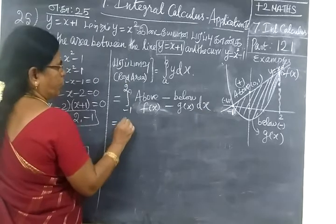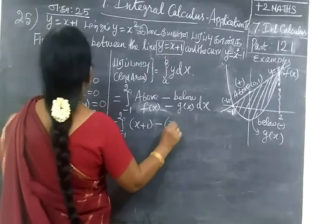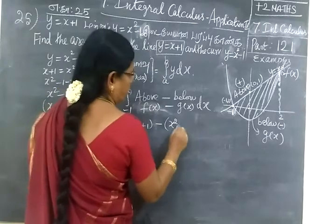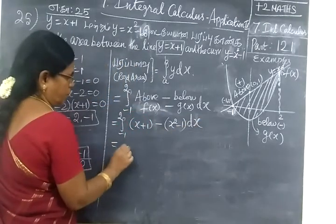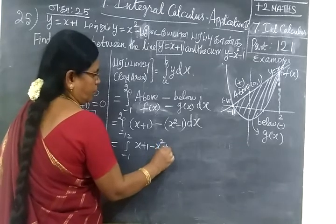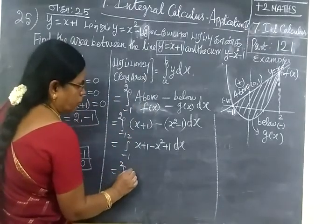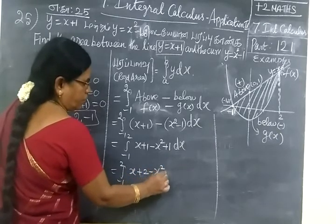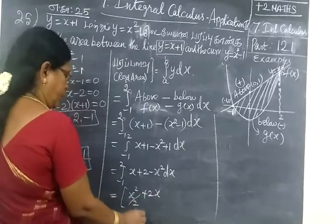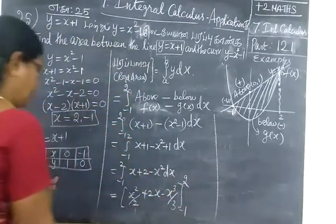So area equal to integral from minus 1 to 2 of (x plus 1) minus (x square minus 1) dx. That is f of x minus d of x. So area equal to integral from minus 1 to 2 of x plus 1 minus x square plus 1 dx, which simplifies to integral of x plus 2 minus x square dx.